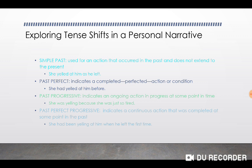The past progressive indicates an ongoing action in progress at some point in time. For example: 'She was yelling because she was just so tired.' The verb phrase is 'was yelling.' The verb 'yelled' now has the -ing ending, which gives it that progressive feel — that it's still happening — and then you have 'was,' which is your past tense verb. This event still happened in the past, but it's called the past progressive.